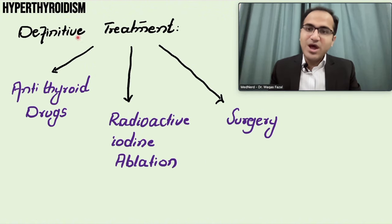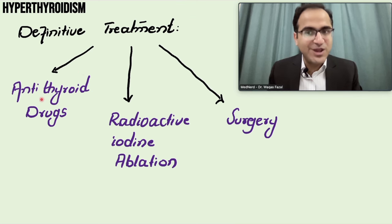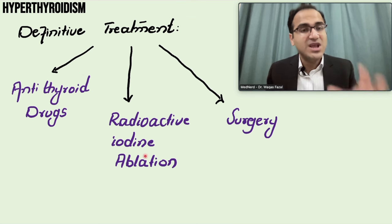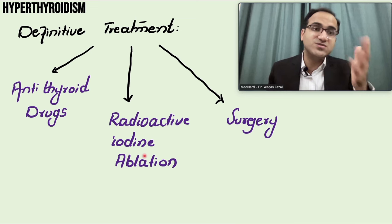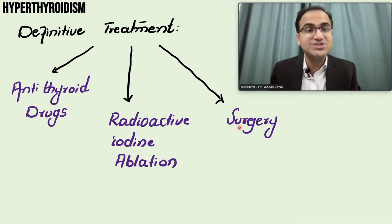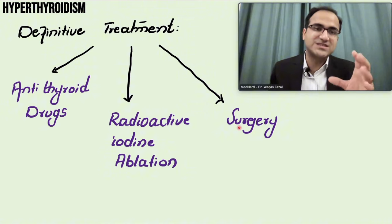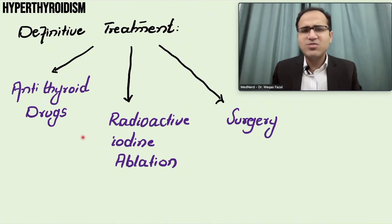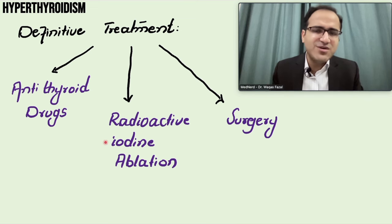Coming to the definitive treatment of hyperthyroidism: we have antithyroid drugs, radioactive iodine ablation - where radioactive iodine is taken up by the thyroid gland and destroys the abnormal tissue producing excess thyroid hormone - and surgery, where you remove the gland producing excess thyroid hormones. The most common cause of hyperthyroidism is Graves' disease, and in Graves' disease, all three options can be used as initial therapy.